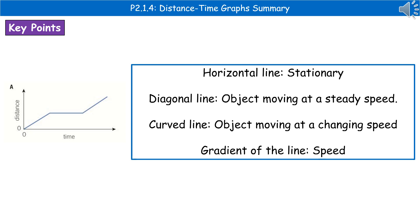A horizontal line on a distance time graph means the object is stationary. A diagonal line means that the object is moving at a steady speed. If it's a curved line, then it's moving at a changing speed. And the overall gradient of our line tells us the actual speed the object is moving at.